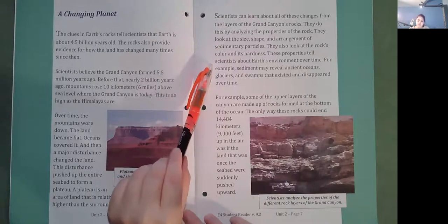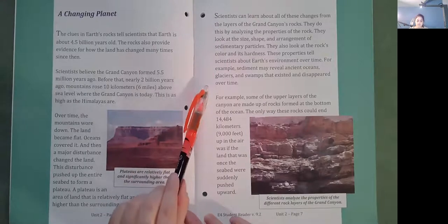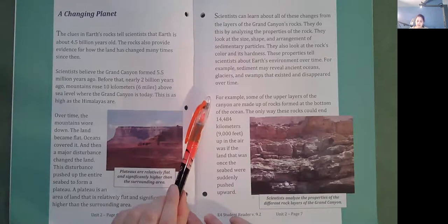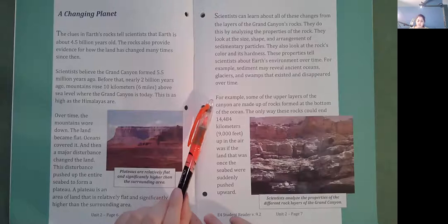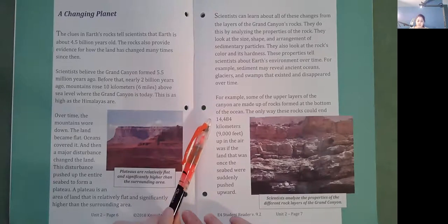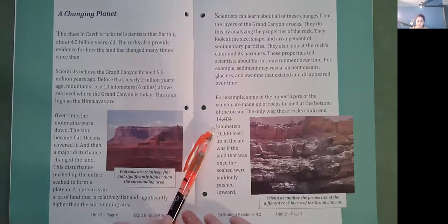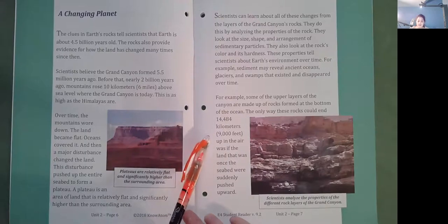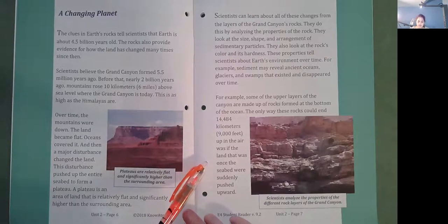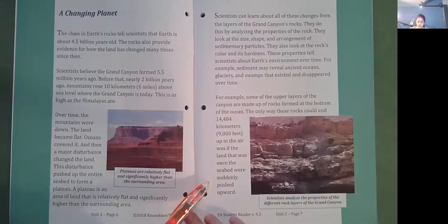For example, sediment may reveal ancient oceans, glaciers, and swamps that existed and disappeared over time. Some of the upper layers of the canyon are made up of rocks formed at the bottom of the ocean. The only way these rocks could end 14,484 kilometers or 9,000 feet up in the air was if the land that was once the seabed were suddenly pushed upward.